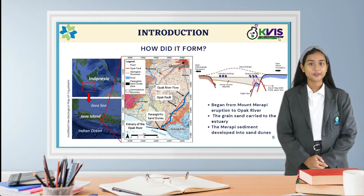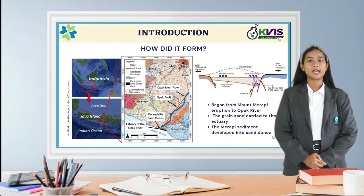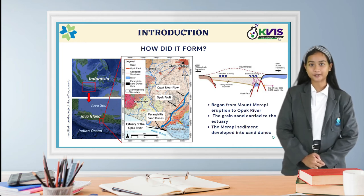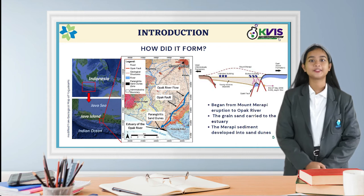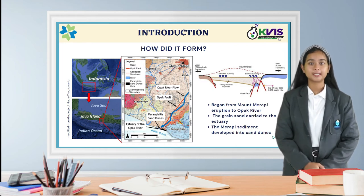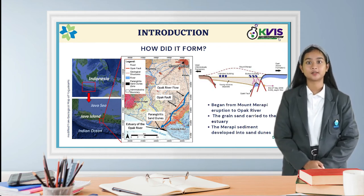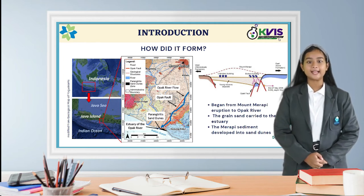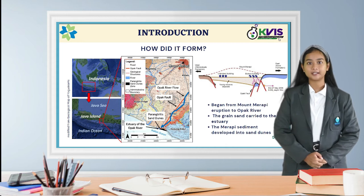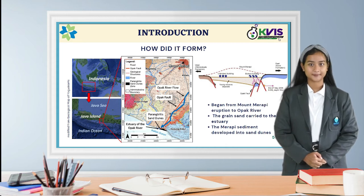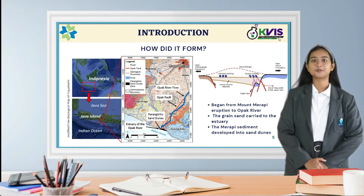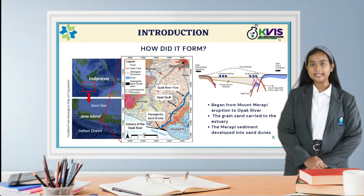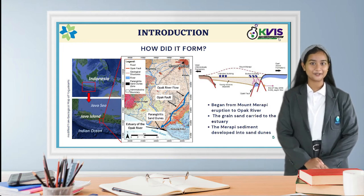From the north, there is Mount Merapi whose eruptive activity generated pyroclastic flows into the open river. Then, the river current and the volcanic sand carried material to the estuary that meets with the ocean current, which then makes up the natural sand carried away by waves and wind to settle upon the beach. The process continues to rapid sedimentation, which then develops into a parabolic sand dune.